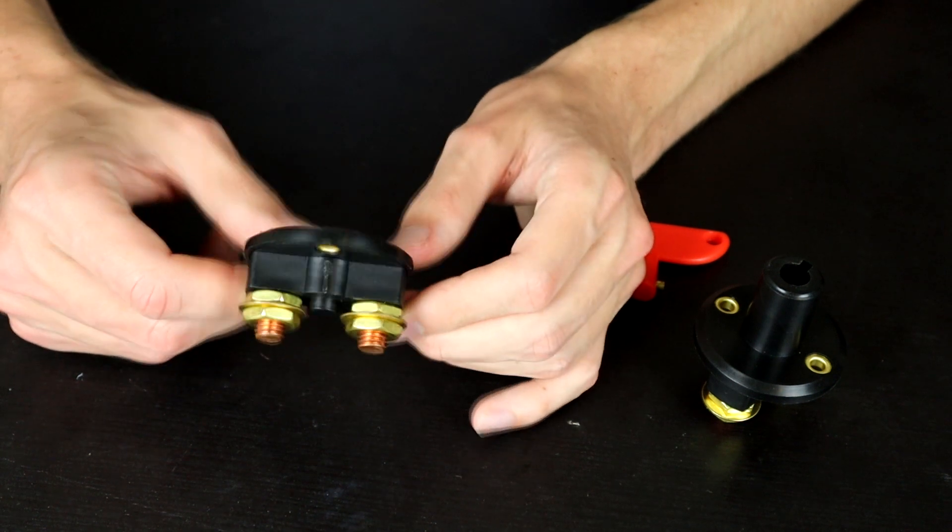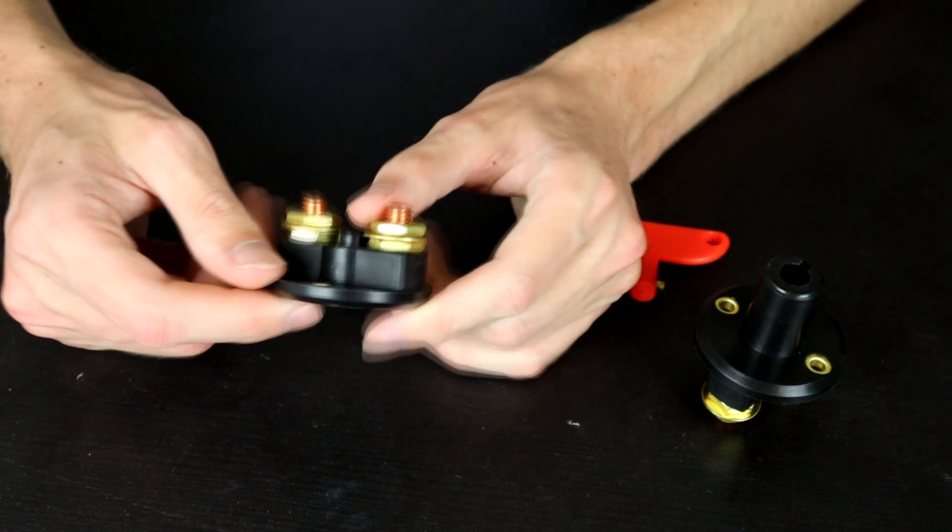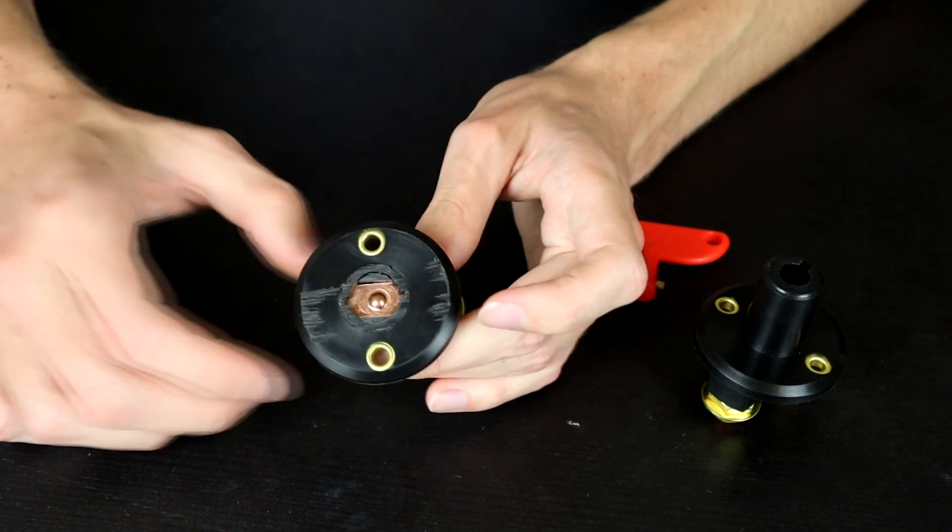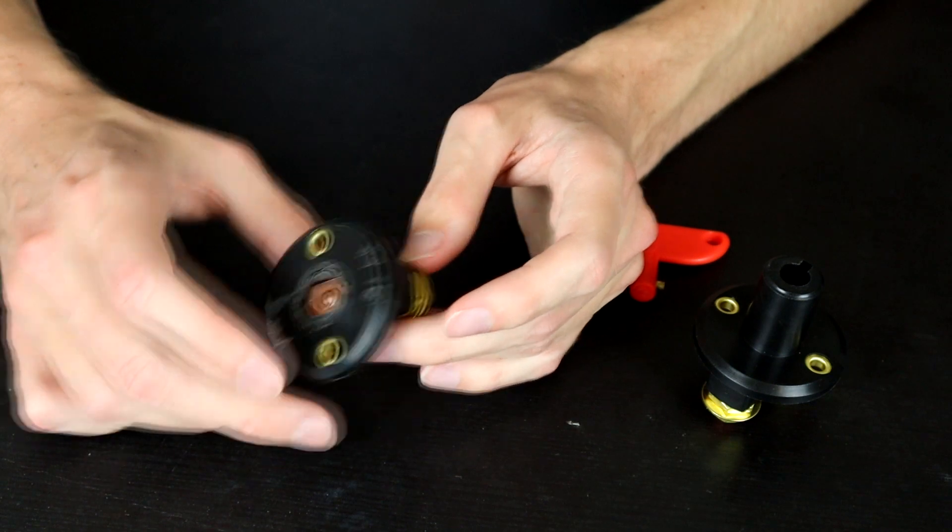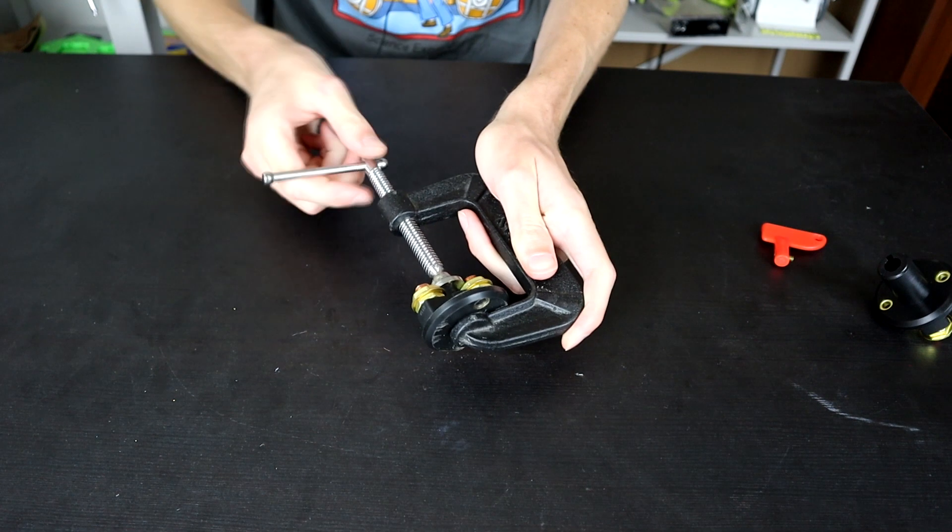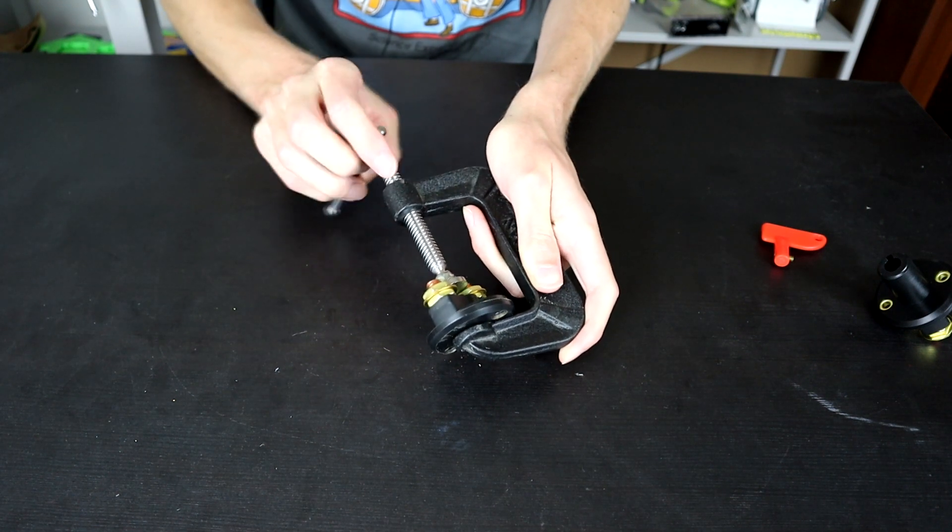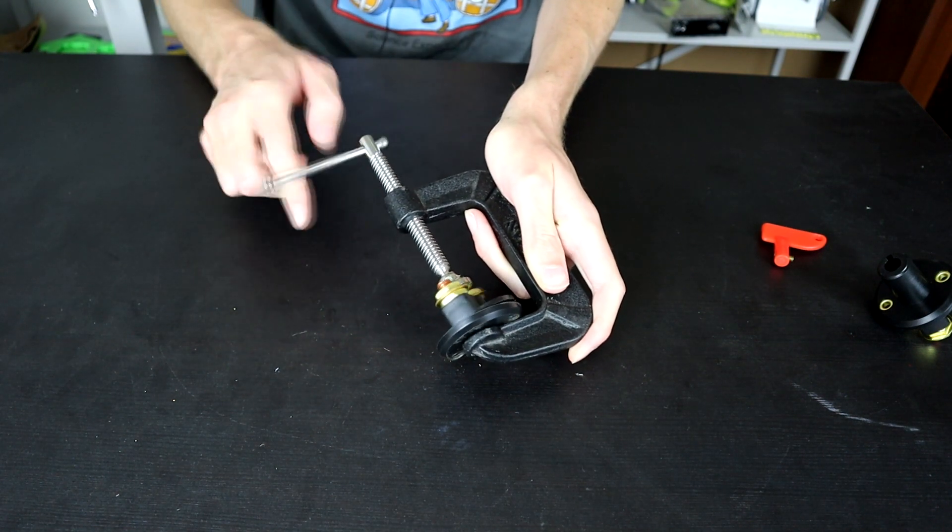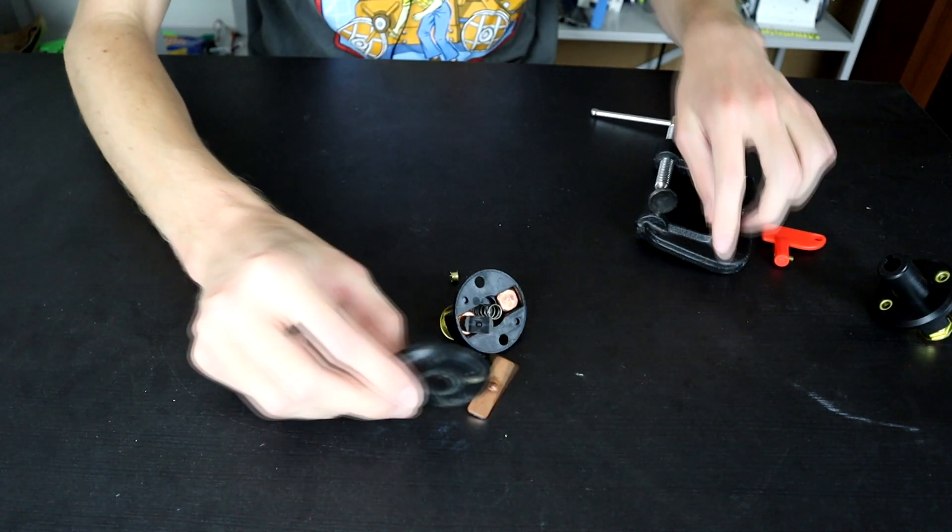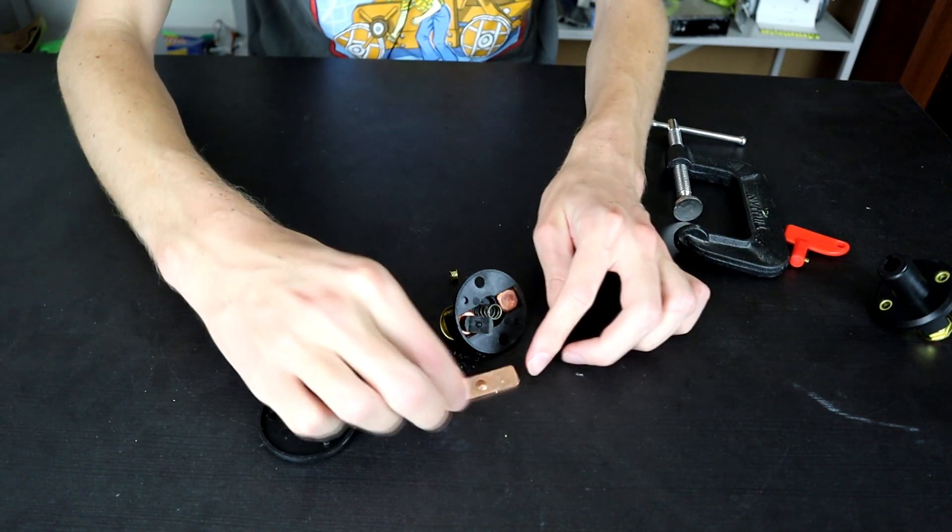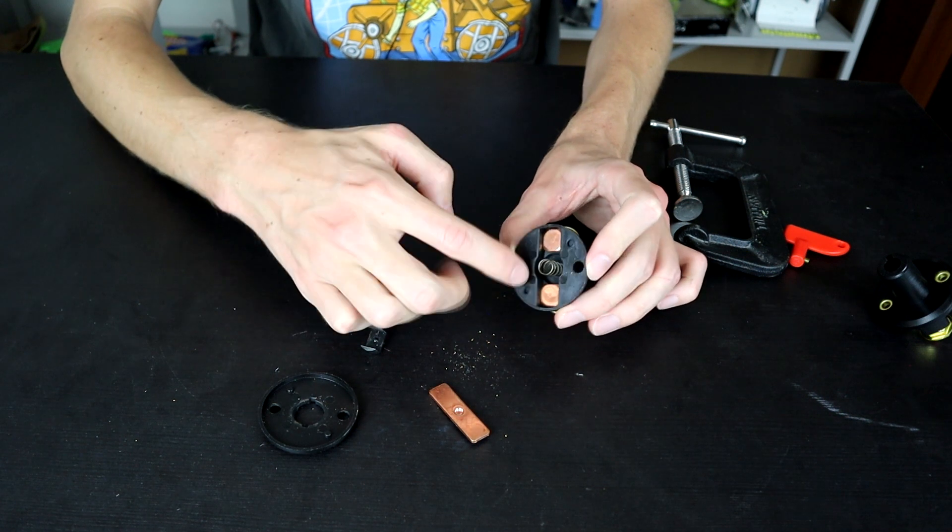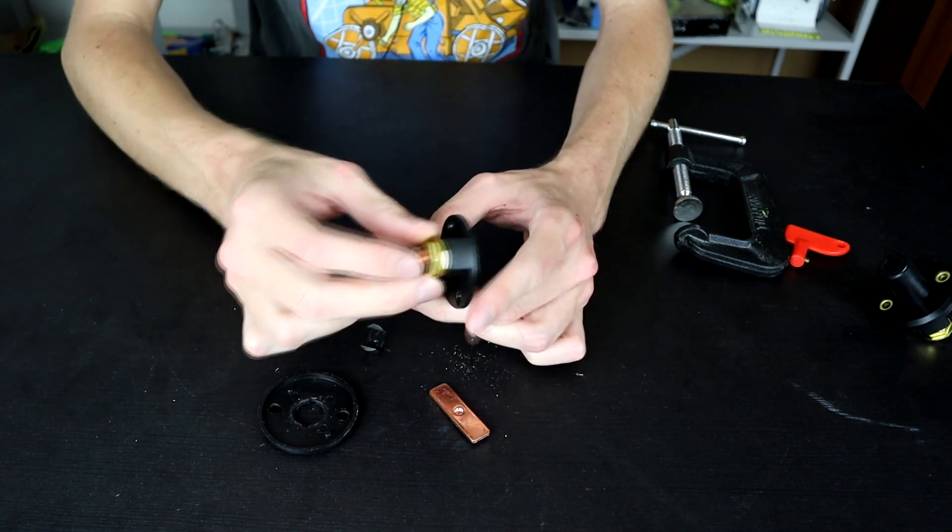But to do all of that we're going to need to bust into this thing. Now it looks to me like the only thing holding the top onto this is these two brass rivets here. So we should just be able to drill these out and then we'll have a look at what's inside. Let's release this slowly and hope that the spring doesn't just destroy everything. That looks like we are all good. So here we go. We have a copper plate, a spring and two copper bolts in there.